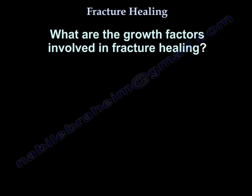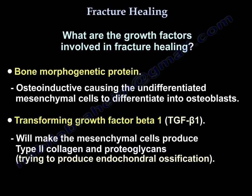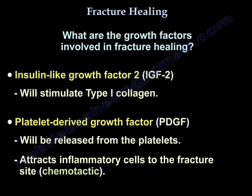What are the growth factors involved in fracture healing? Bone morphogenic protein (BMP) is osteoinductive, causing undifferentiated mesenchymal cells to differentiate into osteoblasts. Transforming growth factor beta-1 makes mesenchymal cells produce type 2 collagen and proteoglycans, promoting endochondral ossification. Insulin-like growth factor 2 stimulates type 1 collagen production. Platelet-derived growth factor is released from platelets and attracts inflammatory cells to the fracture site — it is chemotactic.